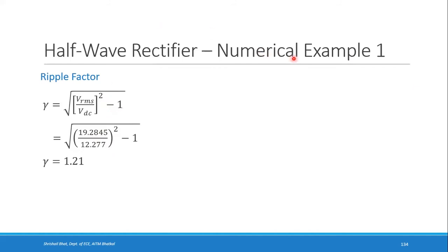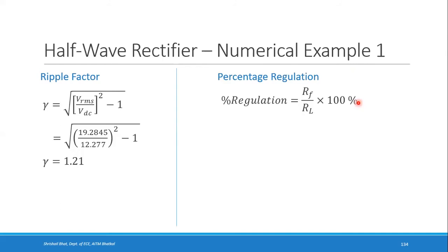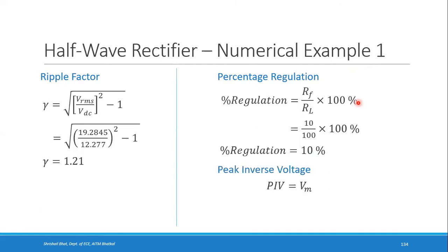Percentage regulation = (RF / RL) × 100% = (10 / 100) × 100 = 10%. The Peak Inverse Voltage (PIV) for a half wave rectifier equals Vm, which is 42.426 volts.